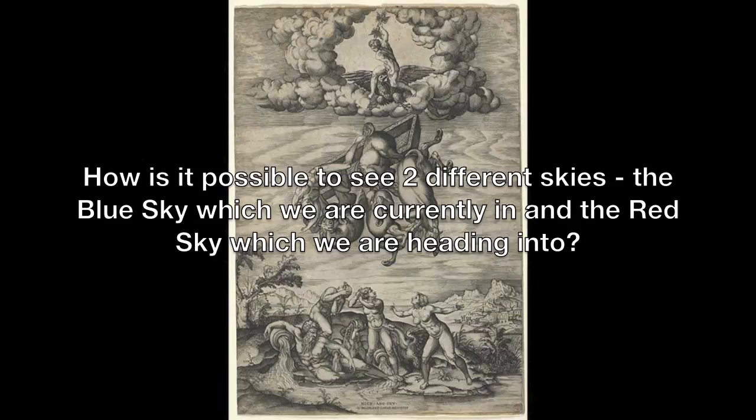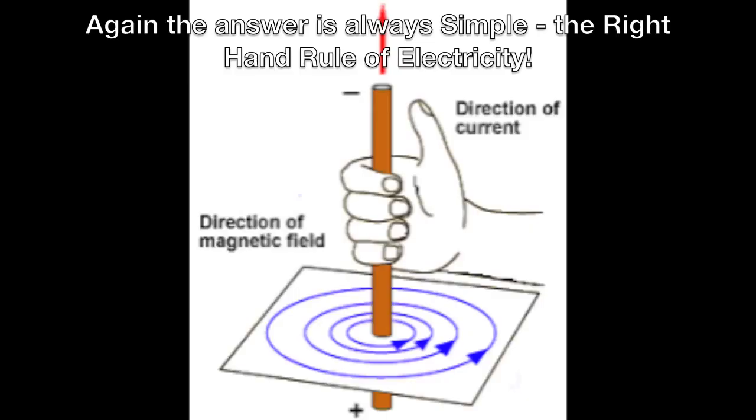How is it possible to see two different skies? The blue sky, which we are currently in, and the red sky, which we are heading into. The answer is always simple: the right hand rule of electricity.